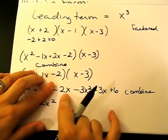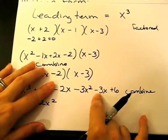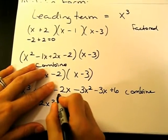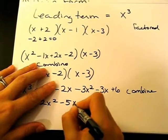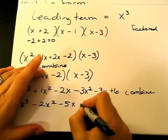And then I have a negative 2x and a negative 3x. So negative 2 minus 3 is negative 5x, and then my 6.